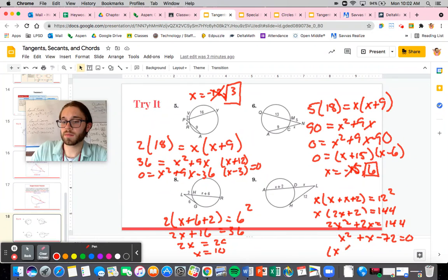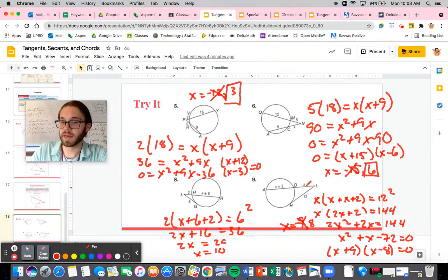So I have X plus 9, X minus 8. My two solutions here are X equals negative 9 and positive 8. I do not want the negative 9. That makes no sense. I'm going to plug in the 8. The 8 will work.